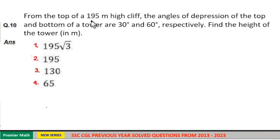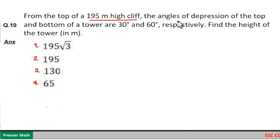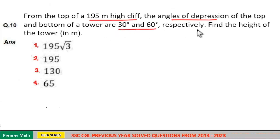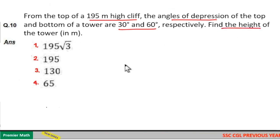From the top of a 195 meter high cliff, the angles of depression of the top and bottom of a tower are 30 degrees and 60 degrees respectively. Find the height of the tower.